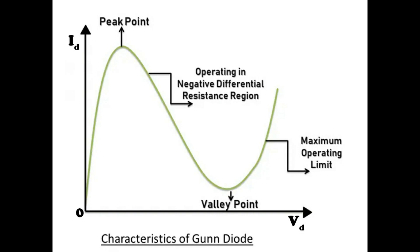This is the VI characteristic graph of the Gunn diode. As shown in the graph, initially the current starts increasing, but after reaching a certain voltage level, the current decreases before increasing again.